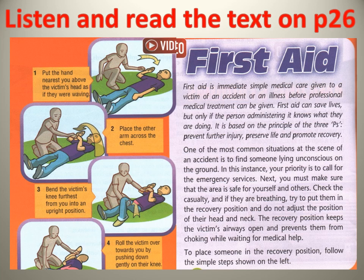To place someone in the recovery position, follow these simple steps. Step 1: Put the hand nearest you above the victim's head as if they were waving. Step 2: Place the other arm across the chest. Step 3: Bend the victim's knee furthest from you into an upright position. Step 4: Roll the victim over towards you by pushing down gently on their knee.